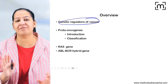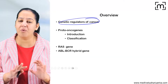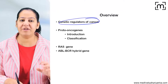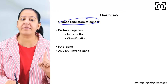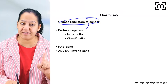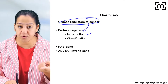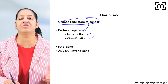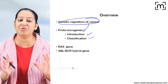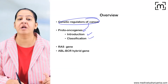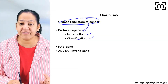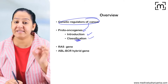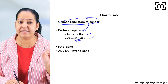At the genetic level, I will explain this in the easiest way. Then I will introduce one of the important genetic regulators: proto-oncogenes. I will explain what proto-oncogenes are, how many there are, and their classification.